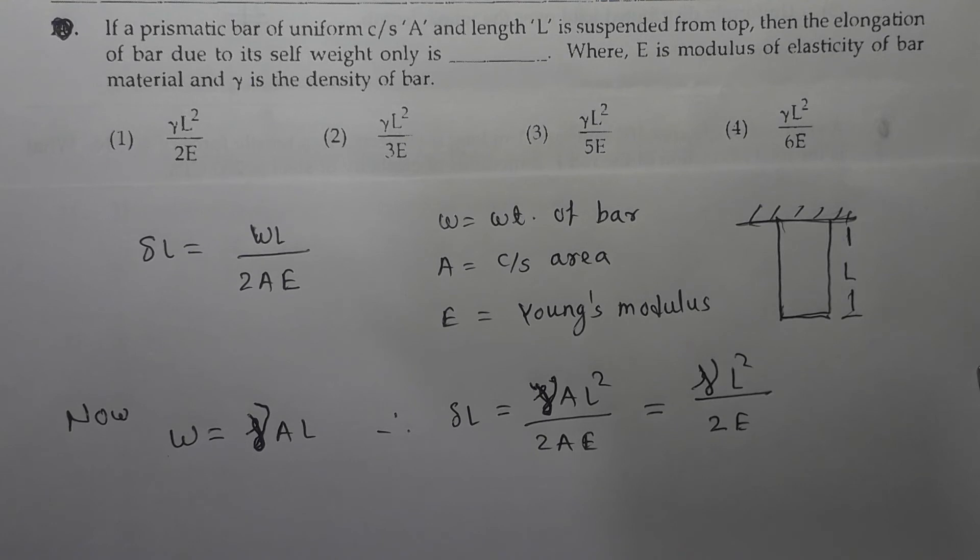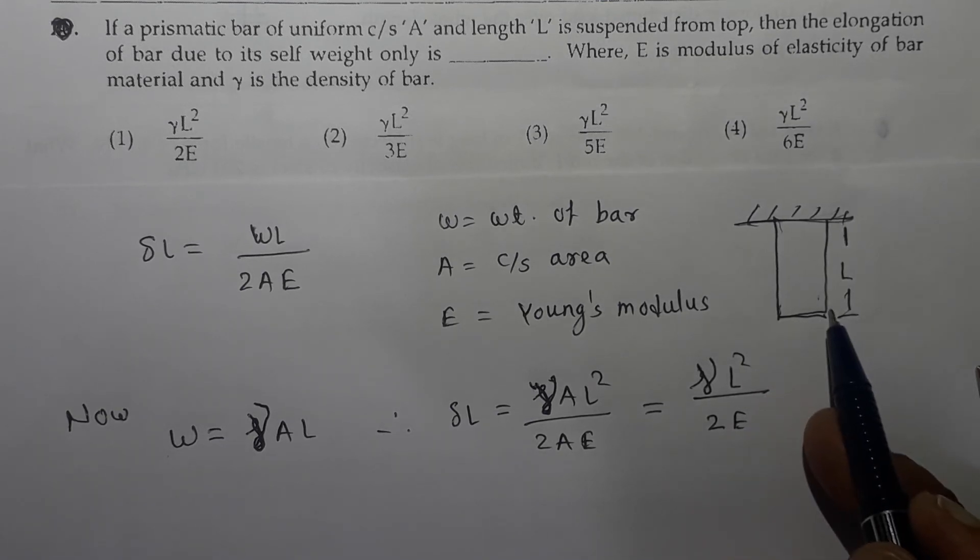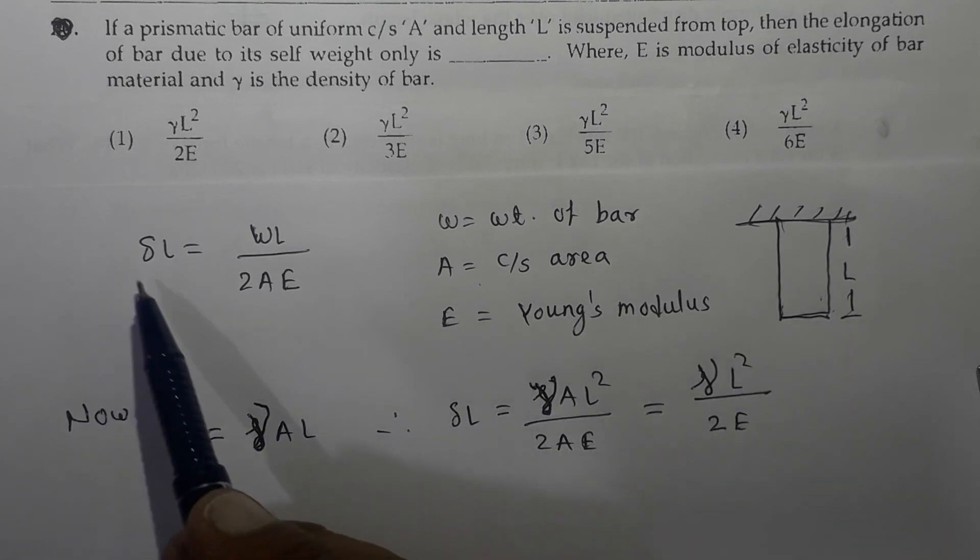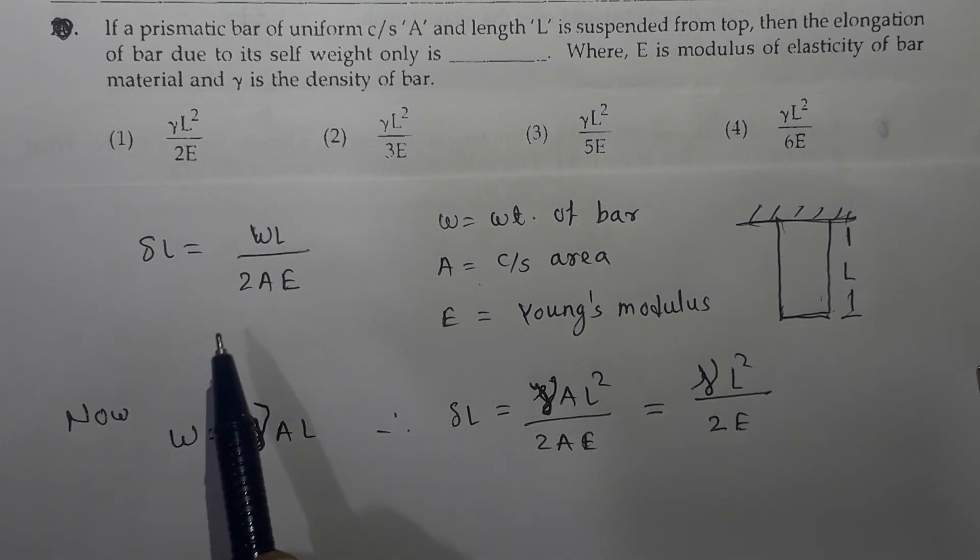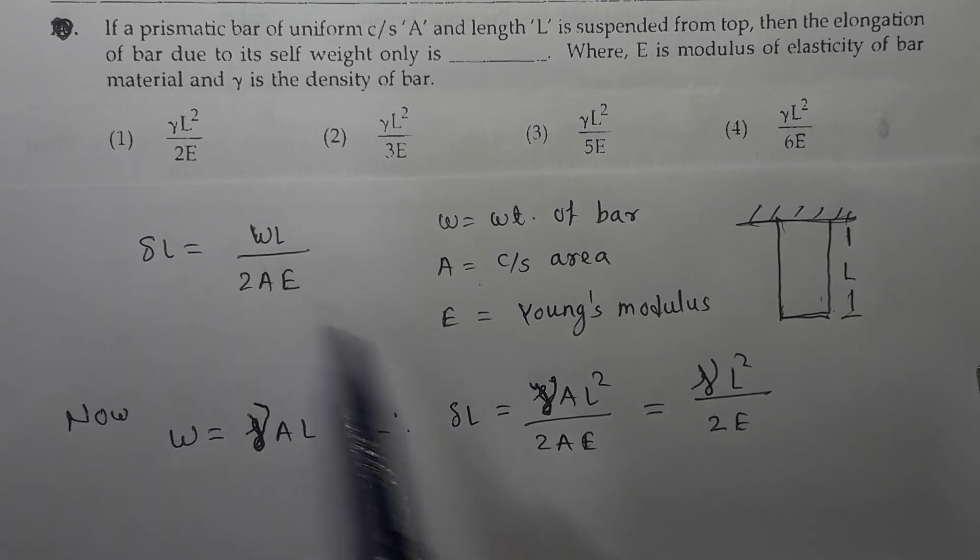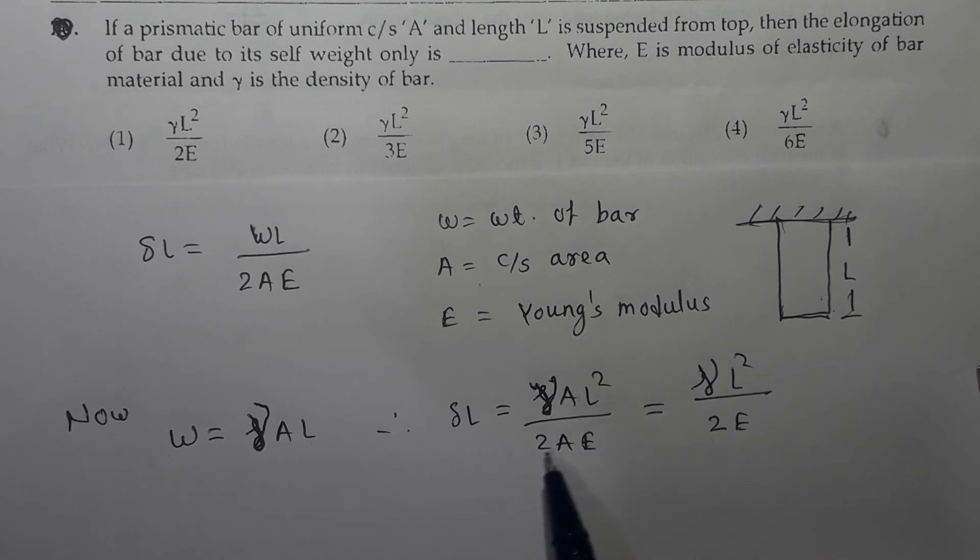Next question: If a prismatic bar of uniform cross section A and length L is suspended from top then the elongation of the bar due to itself weight only is. E is given as modulus of elasticity and gamma is the density of the bar. When a bar is suspended like this with length L and cross sectional area A, the deformation of this bar due to itself weight is given as delta L equals WL divided by 2AE. But again this W is nothing but the specific mass into cross sectional area into length, means specific mass into the volume.